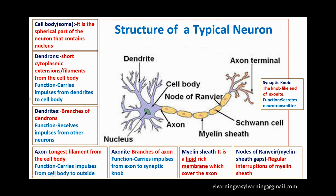Now we will move to the next part — the axon. There is a very long filament from the cell body. This longest filament, which originates from the cell body, is known as the axon. The function of the axon is to carry impulses from the cell body to the outside. At the tip, the axon branches again to form fine filaments known as axonite.